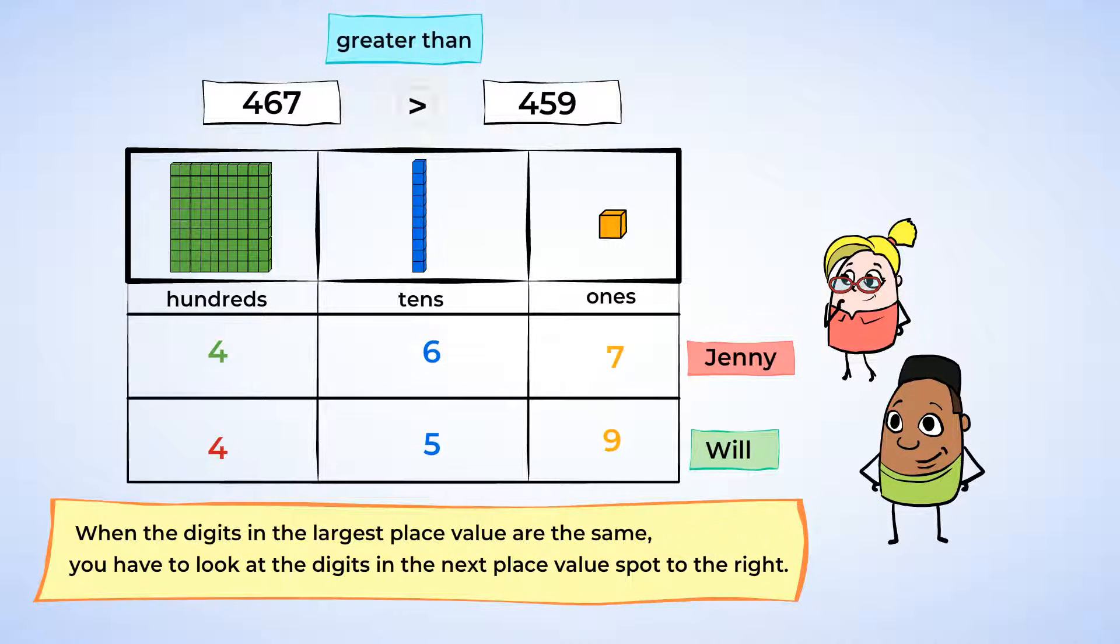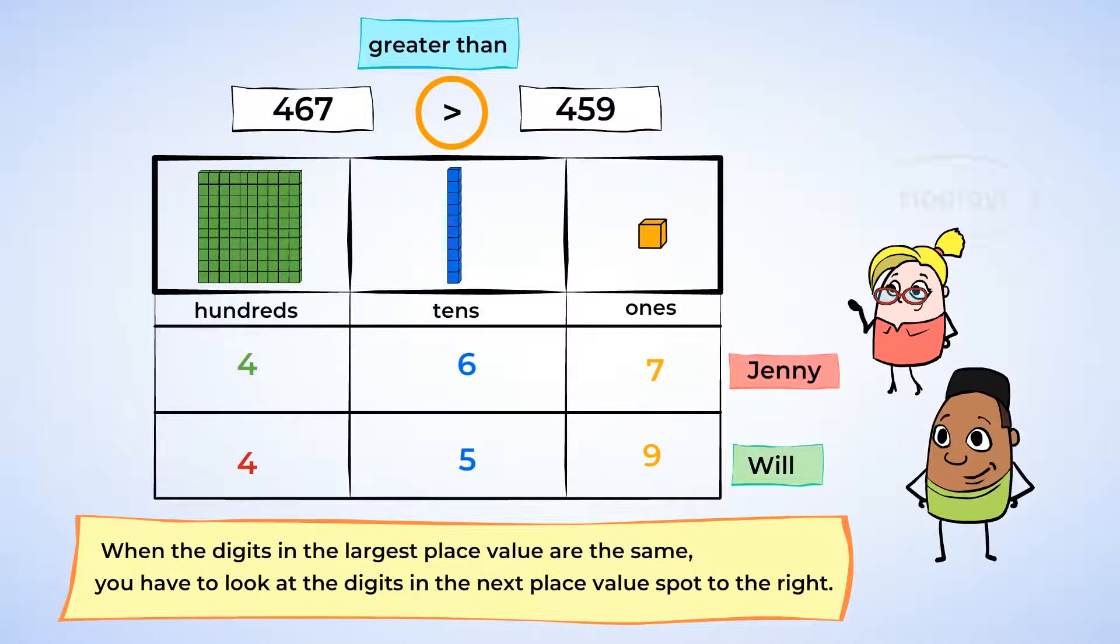And we can show this with a greater than symbol. We know this is the greater than symbol, because it always opens up to the bigger number, and in this problem, the bigger number is on the left. Great work! This one was a bit more tricky, since we had to look at two different place value spots. But you still figured it out, and you know that Jenny won that game. It was pretty close though. Better luck next time, Will.